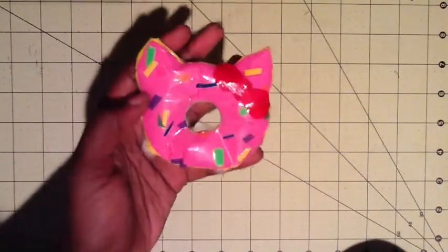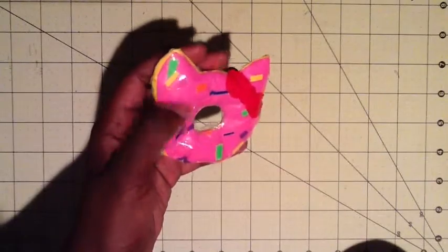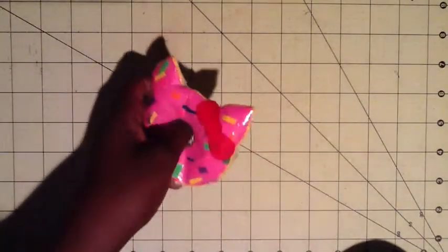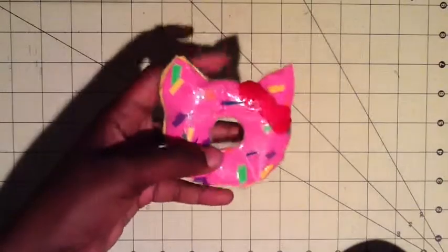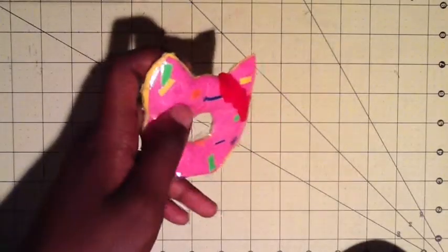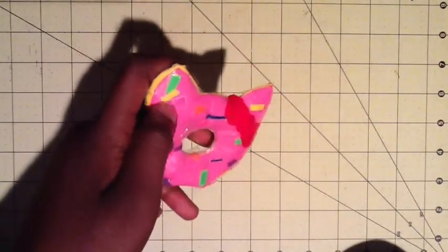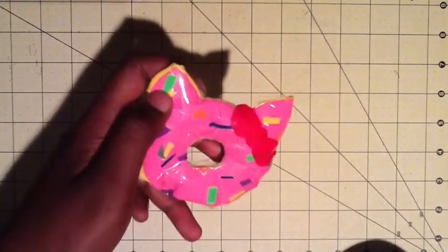I just didn't detail it. It is a yellow donut with pink frosting. It has hot pink, yellow, dark green, lime green, dark blue, orange, and purple sprinkles.